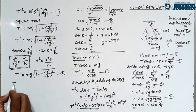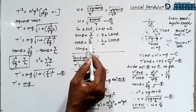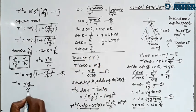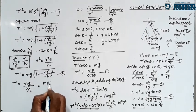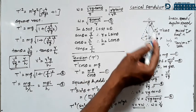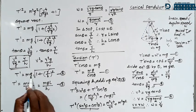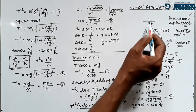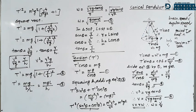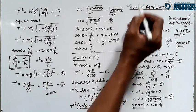Depending on the given data in a numerical problem, you use different formulas: if radius and height are given, use T' = mg√(1+(R/H)²); if height and string length are given, use T' = mgL/H; if mass and angle are given, use T' = mg/cos theta. These equations are very useful in MCQs or solving numericals related to conical pendulum.